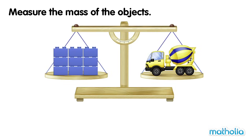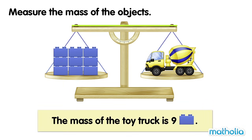When the arm of the balance is level, the masses on each side are equal. The mass of the toy truck is nine blocks.